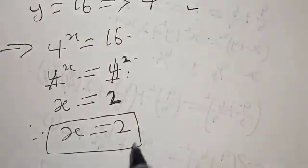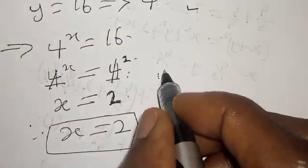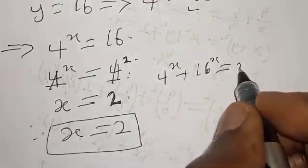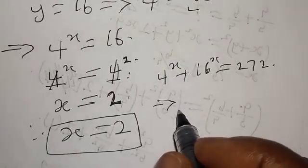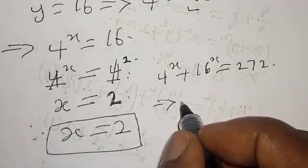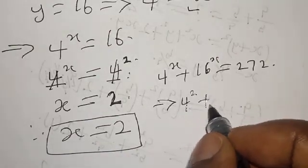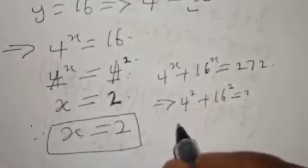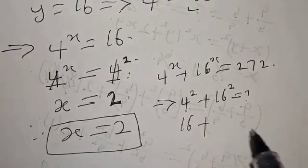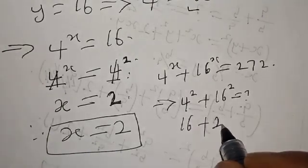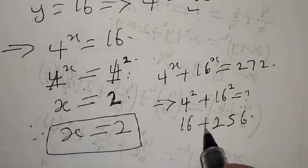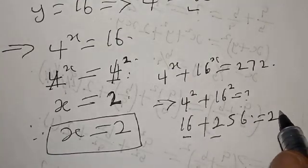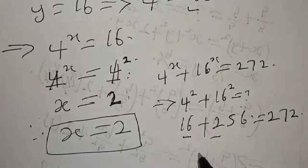Let's check to confirm our answer. We said 4 raised to power x plus 16 raised to power x must equal 272, and we said x equals 2. So we have 4 squared plus 16 squared: 4 squared is 16 and 16 squared is 256. Then 256 plus 16 equals 272. So our answer is correct.